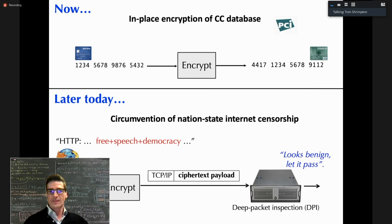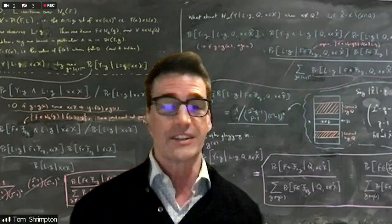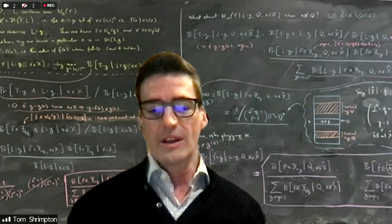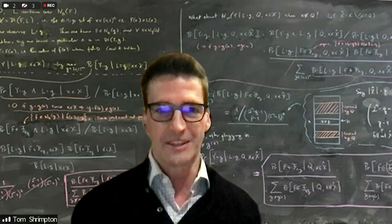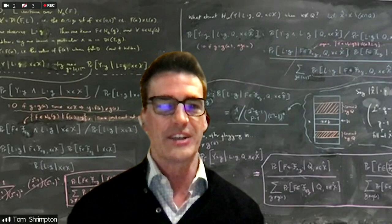There are two use cases that on the surface appear to have nothing to do with each other. The first is: how do you do in-place encryption of credit card numbers? Imagine you have a database at a major credit card vendor with schemas and fields meant to hold 16 decimal digit strings, which are credit card numbers.